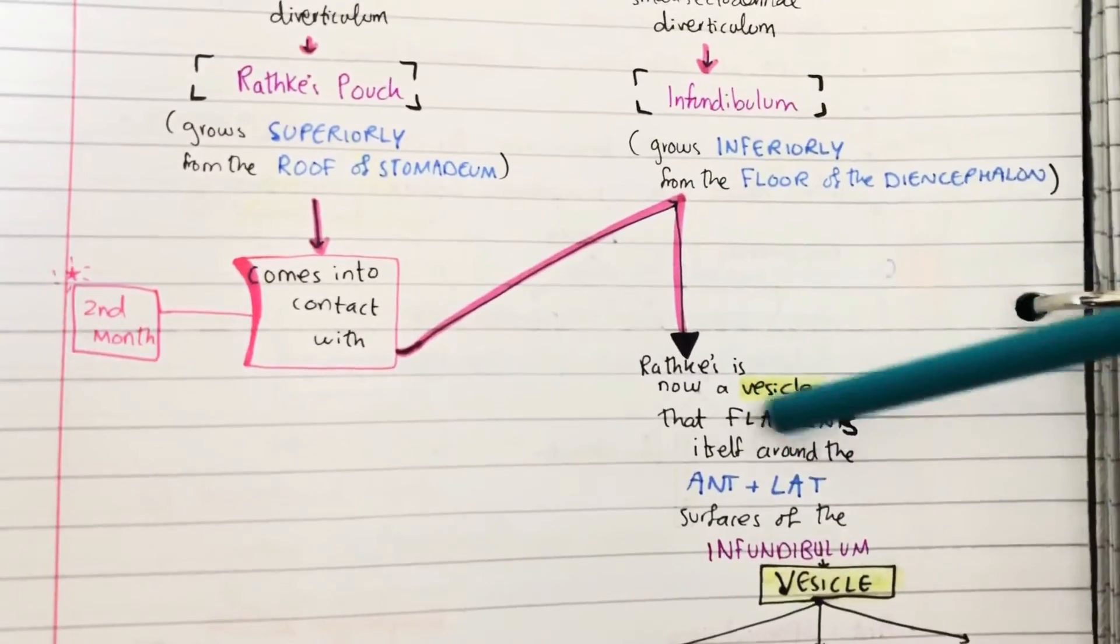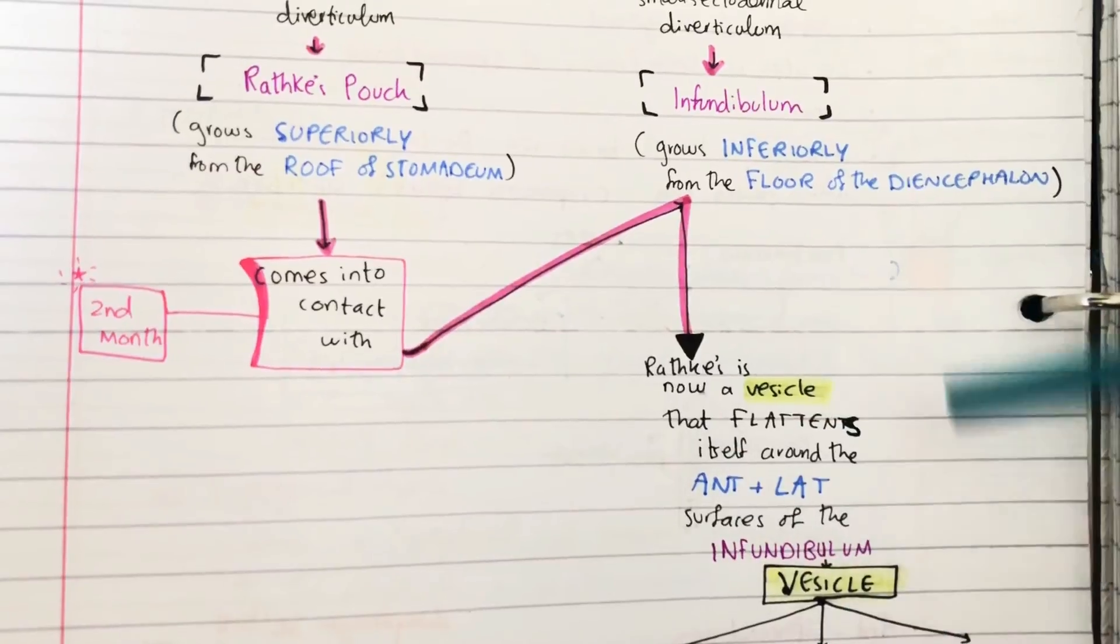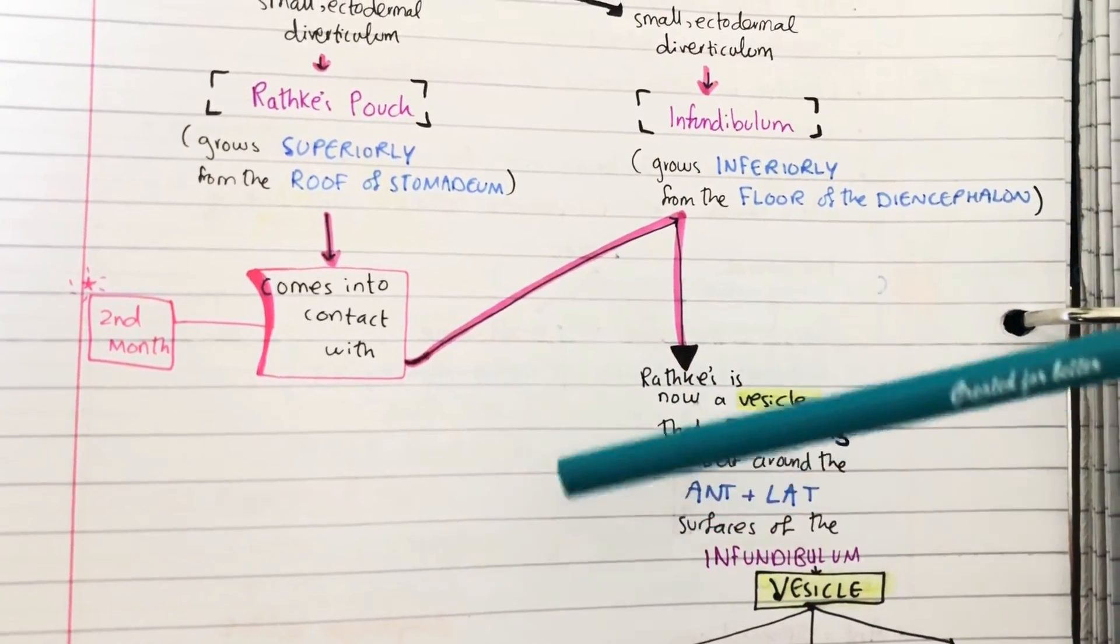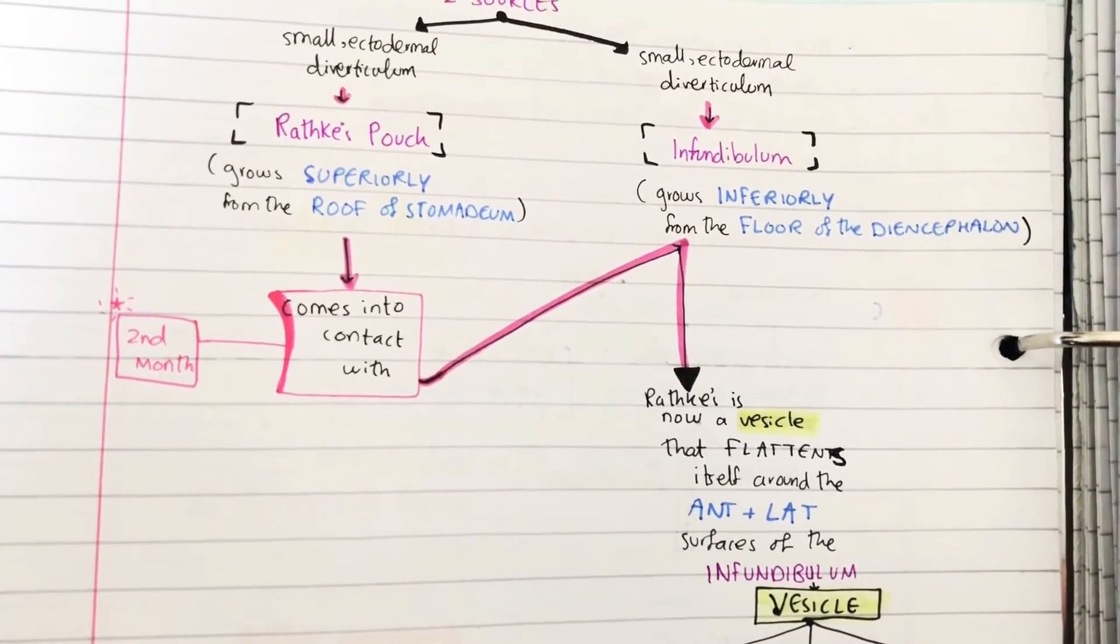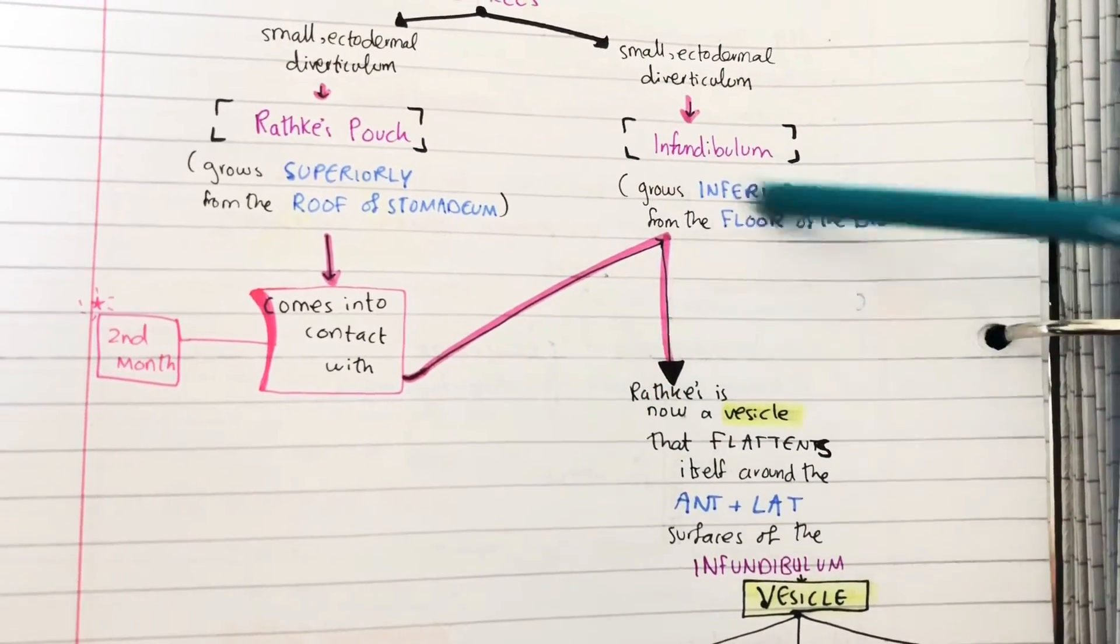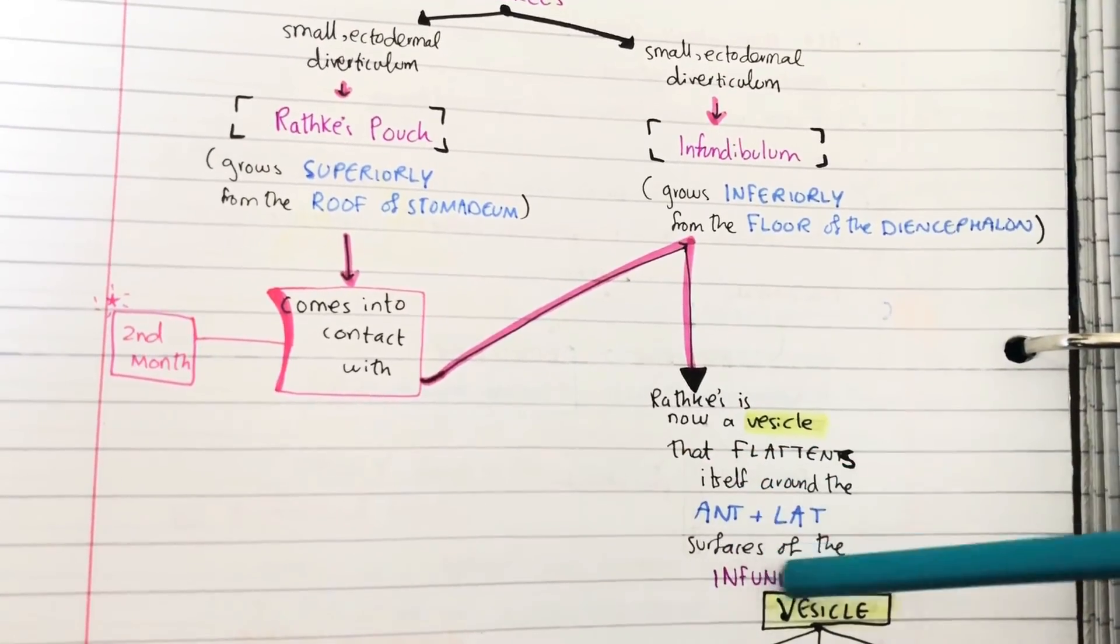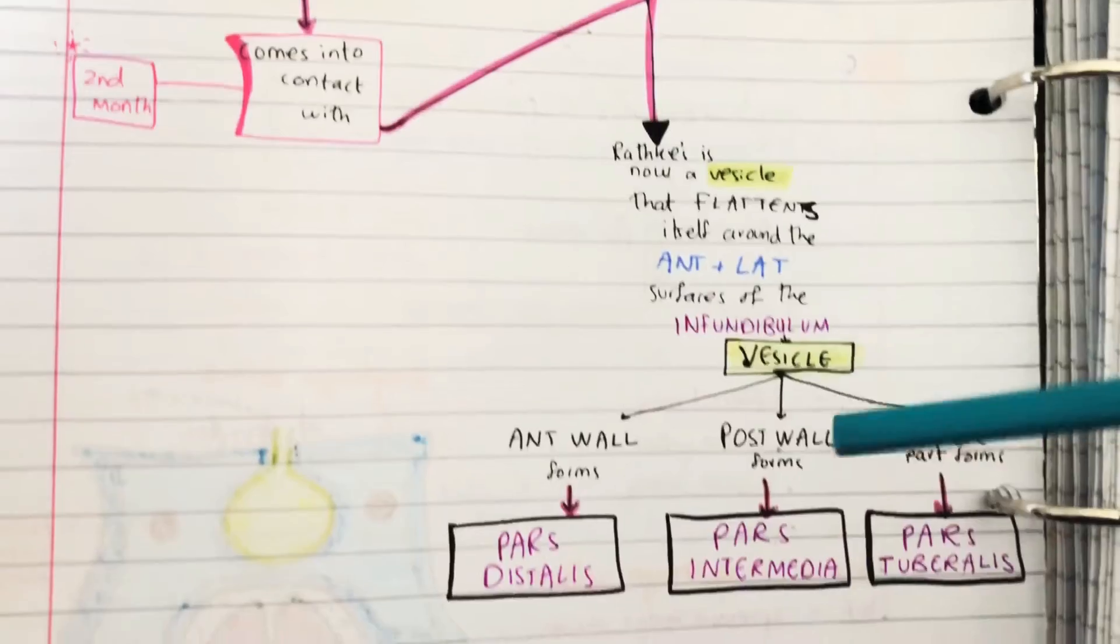Now the Rathke's pouch is now a vesicle that flattens itself around the anterior and lateral parts of the infundibulum. Does that make sense? It just grows and then it comes into contact with this and it wraps itself around it, flattens itself around the infundibulum on the anterior and lateral parts.